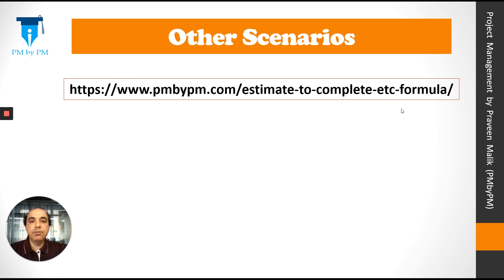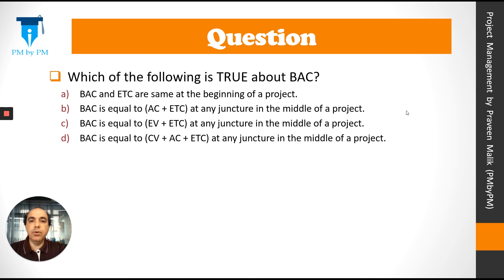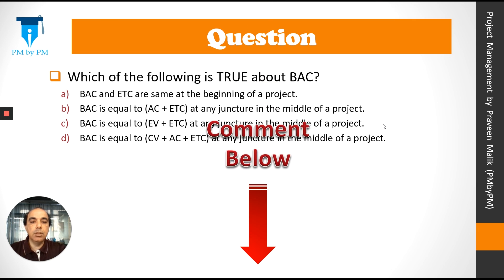I have written a full post covering some other scenarios — you can follow the link in the description below. I have a question for you: which of the following is true about BAC? BAC and ETC are the same at the beginning of a project; BAC equals AC plus ETC at any juncture in the middle of a project; BAC equals EV plus ETC at any juncture in the middle of a project; or BAC equals CV plus AC plus ETC at any juncture in the middle of a project. I'm curious to know your opinion — please comment below.